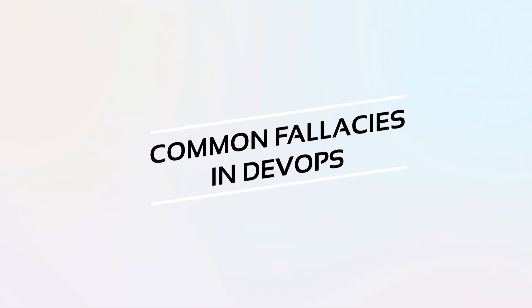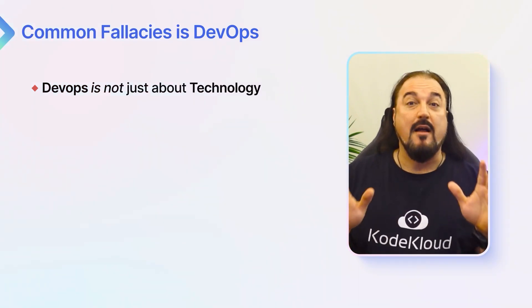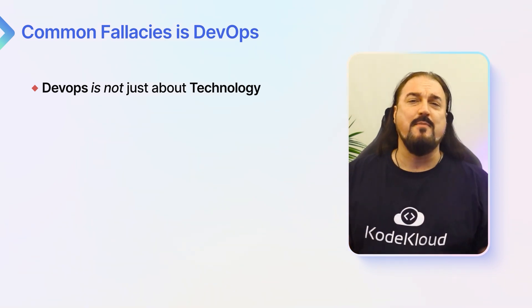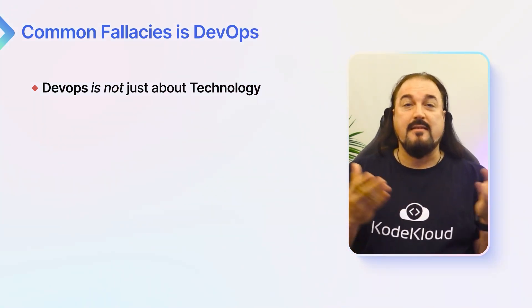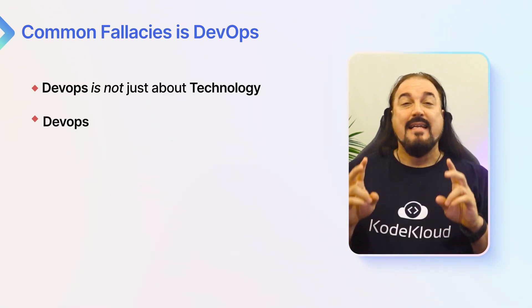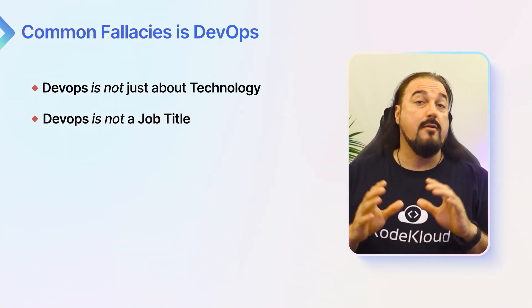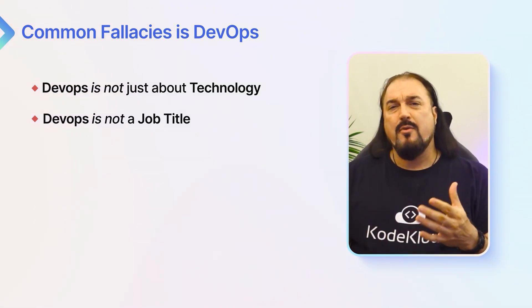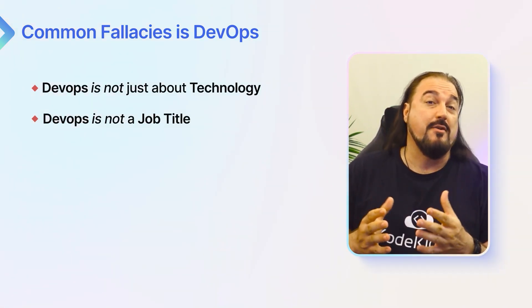It's hard to define a thing by what it is not, but here are some common fallacies about DevOps. First, DevOps is not just about technology. Technology comes at the end of a DevOps mindset, not at the beginning — and what good is the best technology in the world if you don't have the right processes and people to support and implement it? Second, DevOps is not a job title. Creating collaboration among people doesn't happen just because you are titled a DevOps engineer, nor does having a container orchestrator solve all of your interaction, trust, or observability problems.